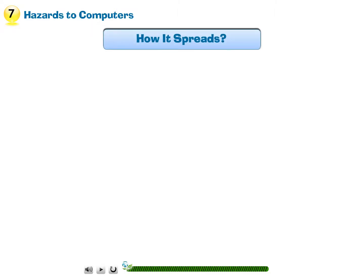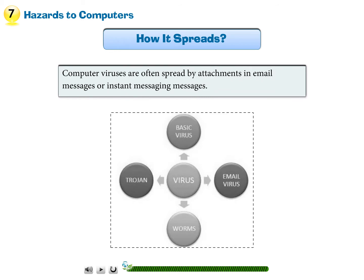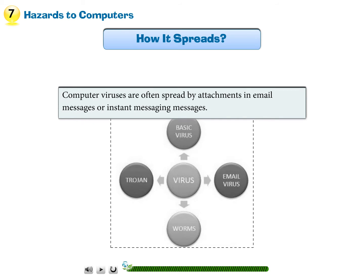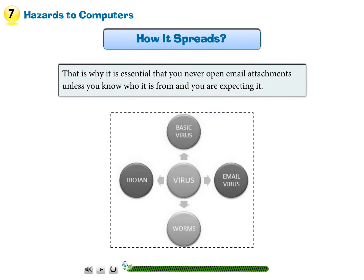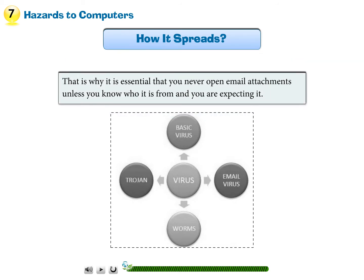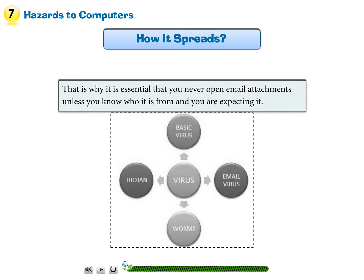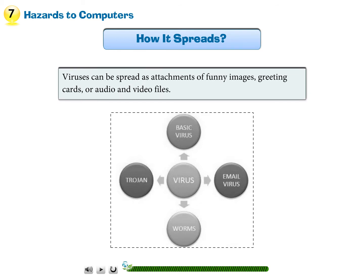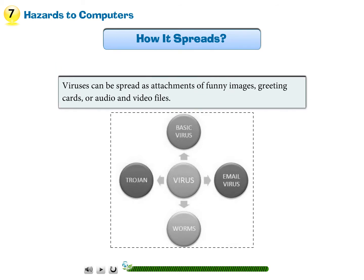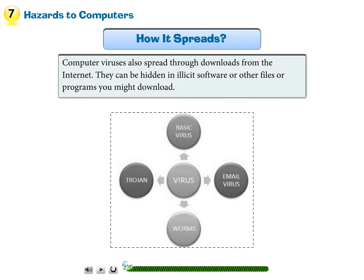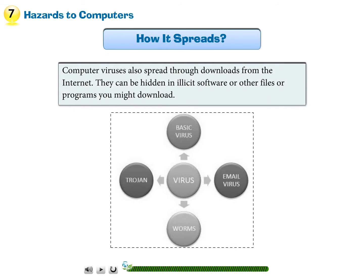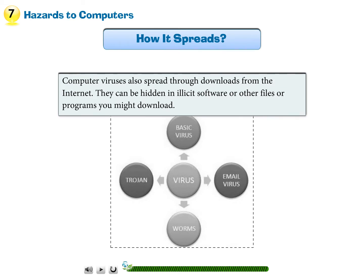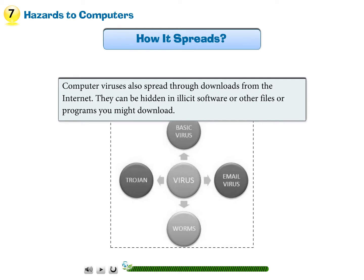How does a virus spread? Computer viruses are often spread by attachments in email messages or instant messaging messages. That is why it is essential that you never open email attachments unless you know who it is from and you are expecting it. Viruses can also be spread as attachments of funny images, greeting cards, or audio and video files, as well as through downloads from the internet, hidden in illicit software or other files or programs you might download.